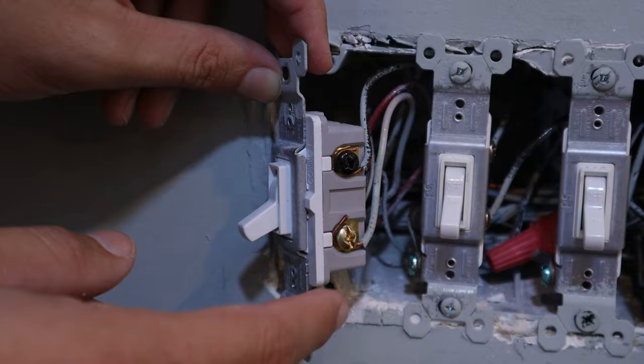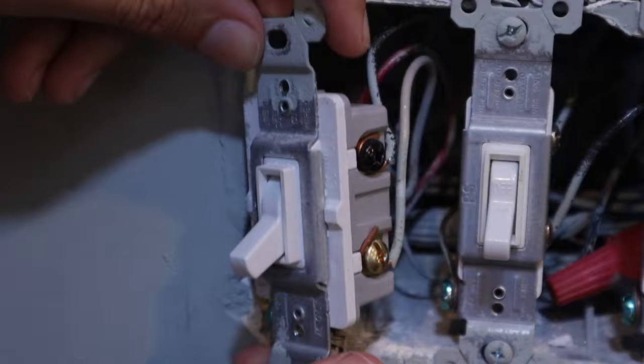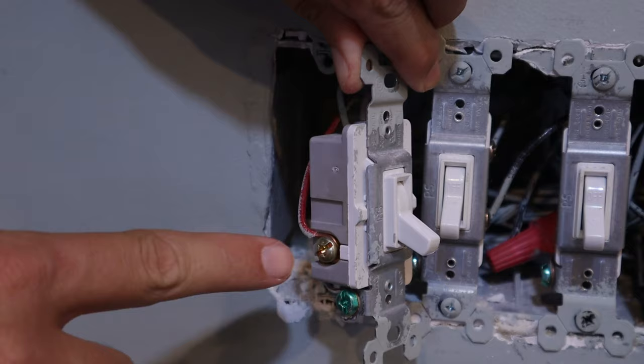Now, that means that then this one down below is a traveler wire, which I see the electrician did not get that tucked in all the way, which that is not good. So we're going to fix that in just a moment. And then if you switch it over here to the other side, you'll see this red wire. This is also a traveler wire.